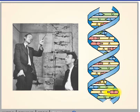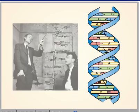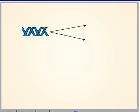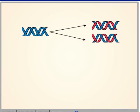The complementary nature of the two strands suggested to the scientists a model for DNA replication. They proposed that the old strands serve as templates to make new, complementary strands. The two resulting double helices would each contain one new and one old strand.